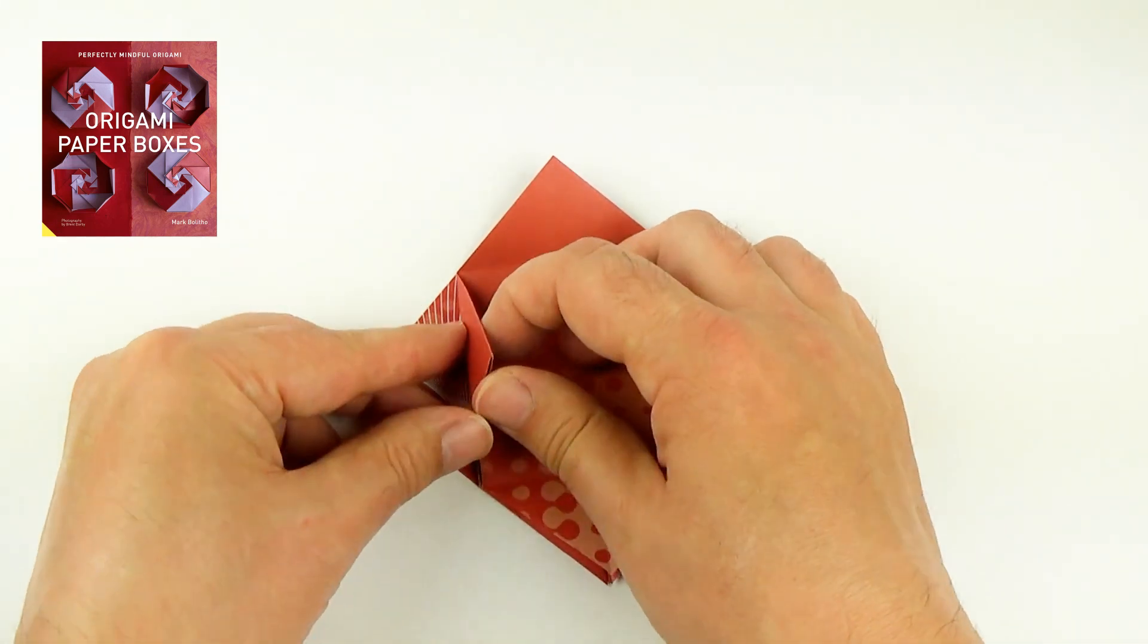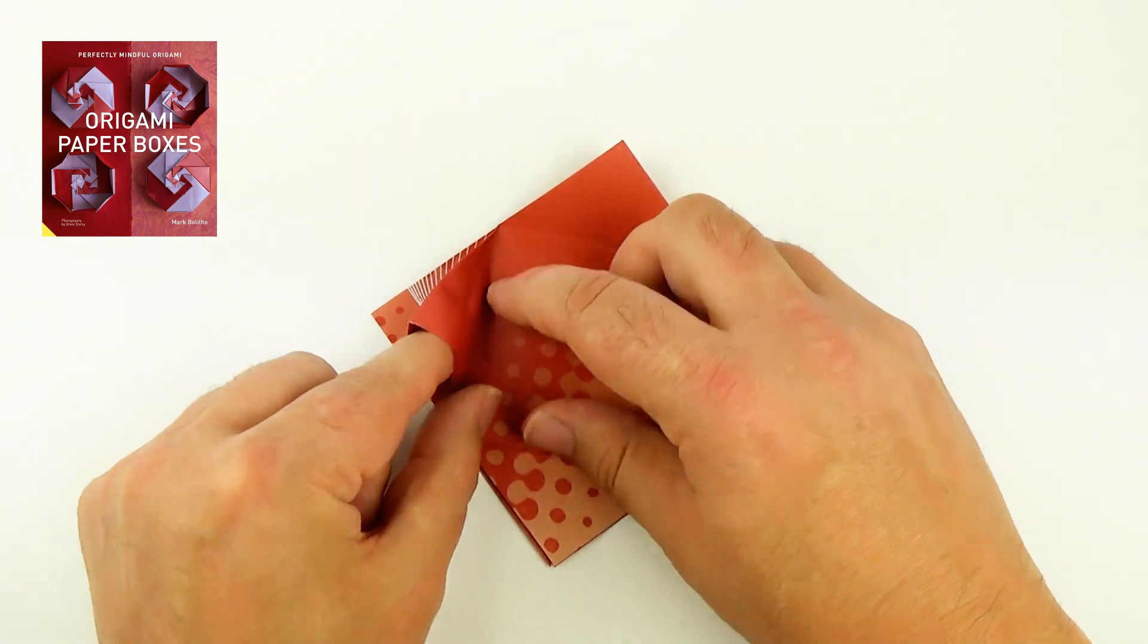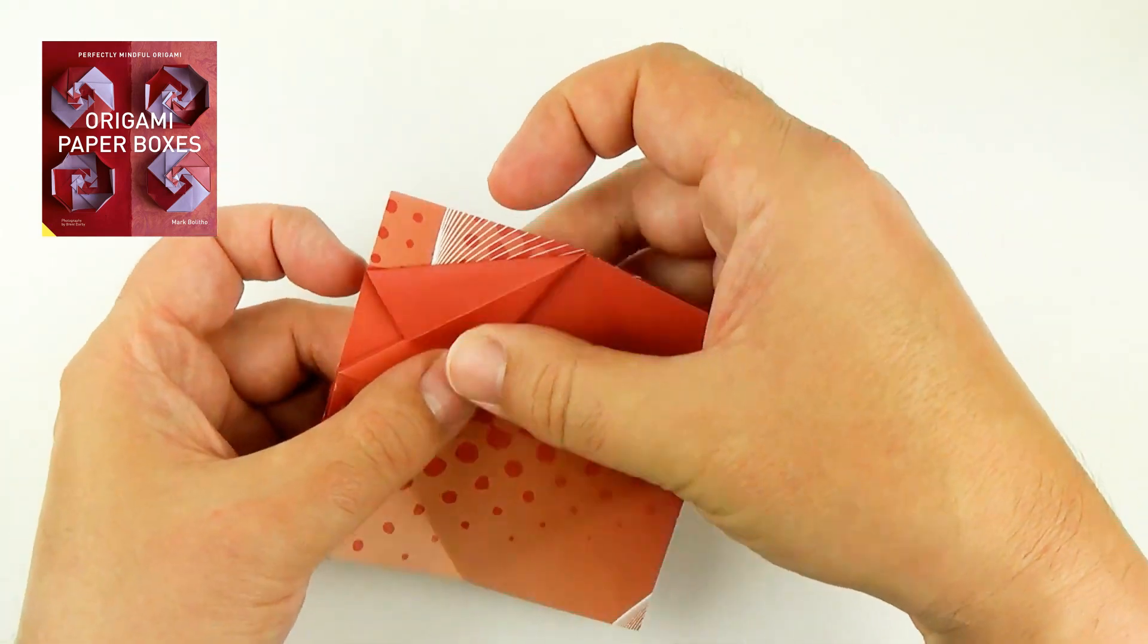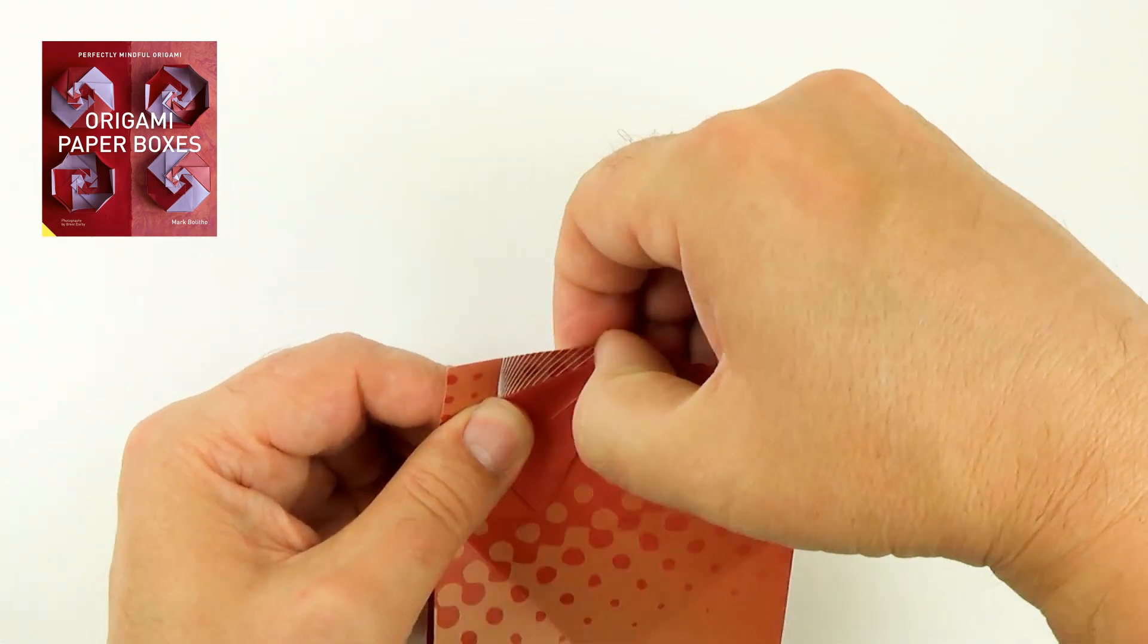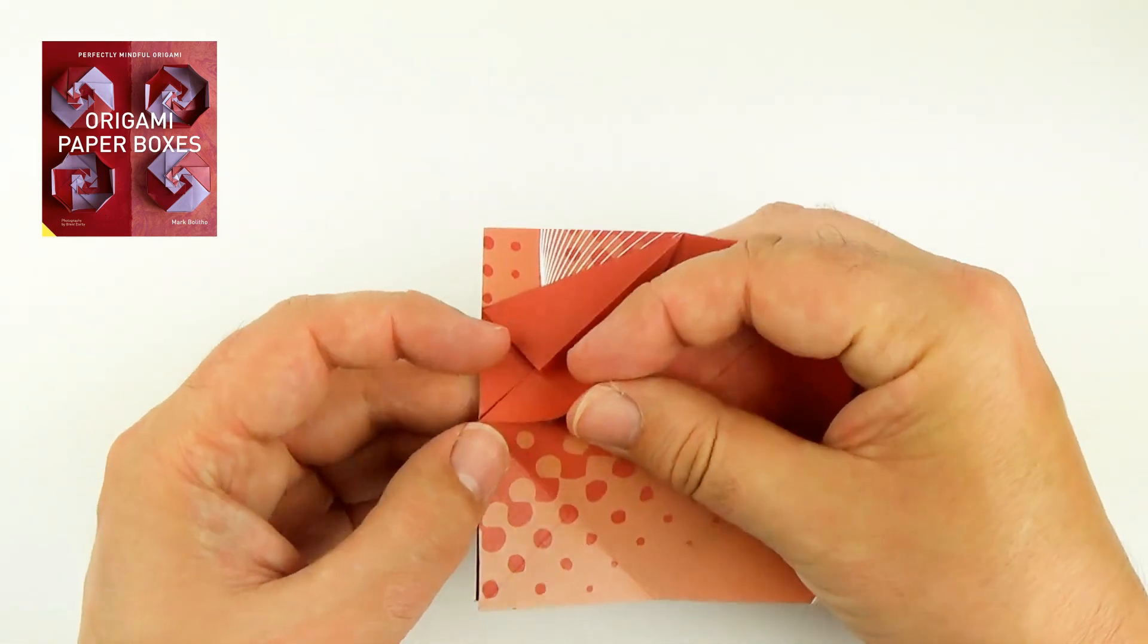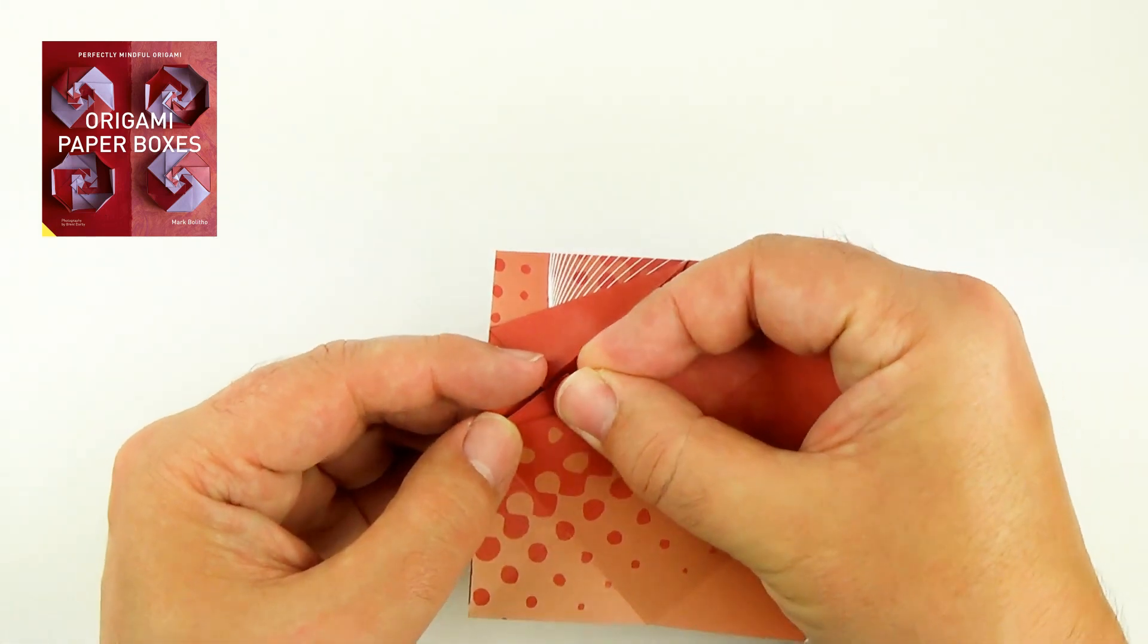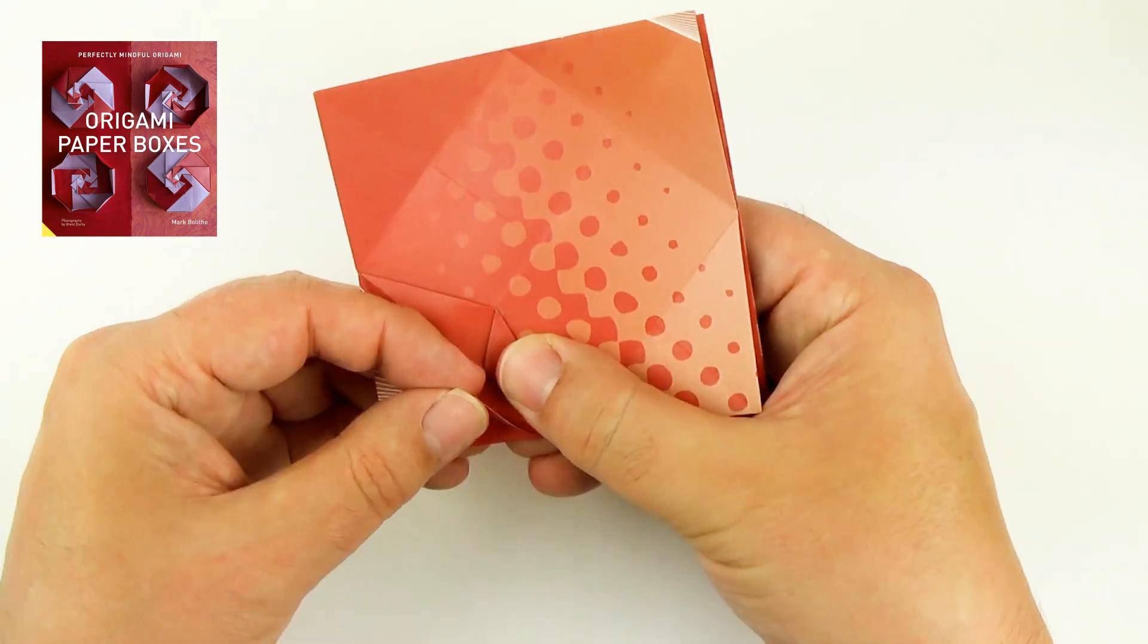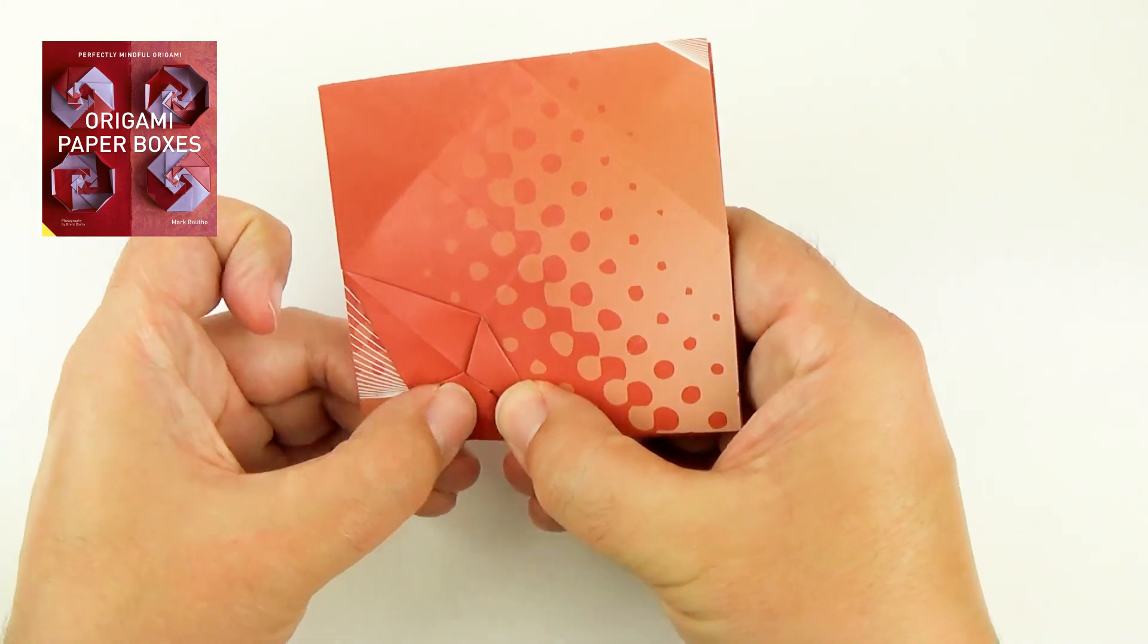Fold it up perpendicular. Separate the layers and squash flat. Now take the corners of this point and fold them in. So put one in and the other.